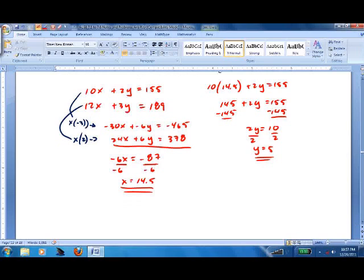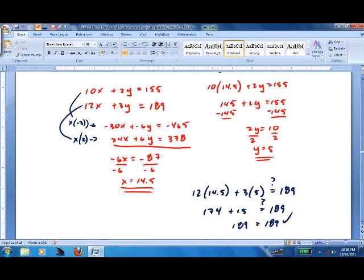Let's check it with the second equation. 12 times 14.5 plus 3 times 5 should equal 189. 174 plus 15 should equal 189. 189 equals 189. Lots of work to do. Get practicing. This will take you a long time. Once you get good at it, it'll sharpen up all your skills. Good luck.